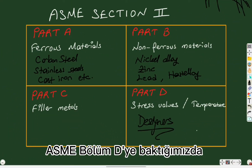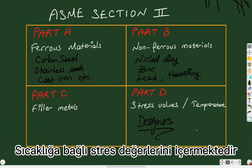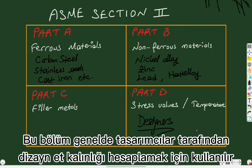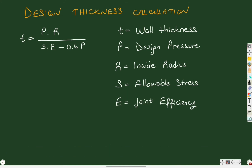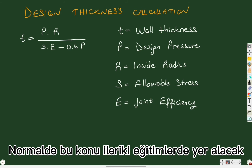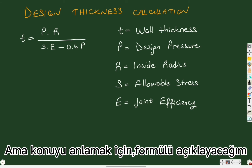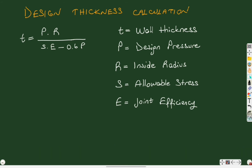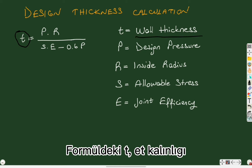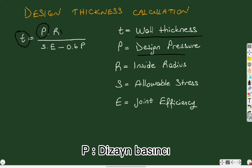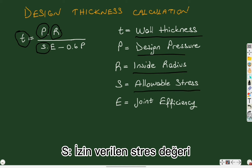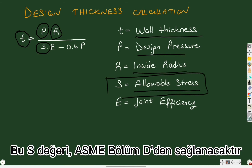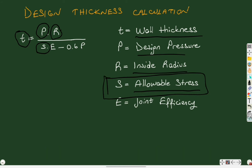ASME Section 2 Part D includes stress values according to temperature, and this part is generally used by designers to calculate the wall thickness. The design wall thickness calculation formula is: T is the wall thickness, P is the design pressure, R is the inside radius, S is the allowable stress — provided from ASME Section 2 Part D — and E is the joint efficiency.